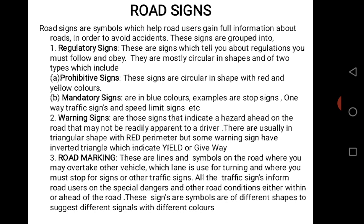Road signs are symbols which help road users gain full information about the road in order to avoid accidents. These signs are grouped into two. First, regulatory signs: these are signs which tell you about regulations you must follow and obey. They are mostly circular in shape and come in two types — prohibitive signs and mandatory signs. Prohibitive signs are circular with red and yellow color, while mandatory signs are in blue. Examples are stop signs, one-way traffic signs, and speed limit signs.